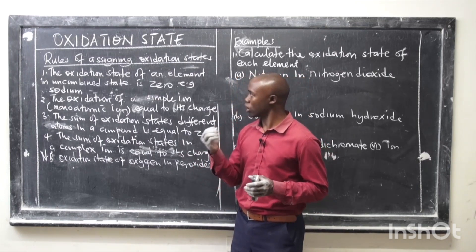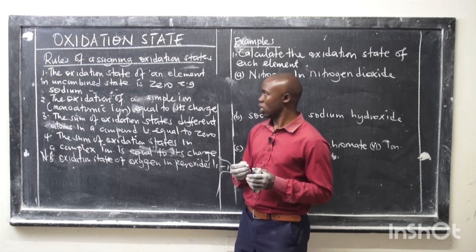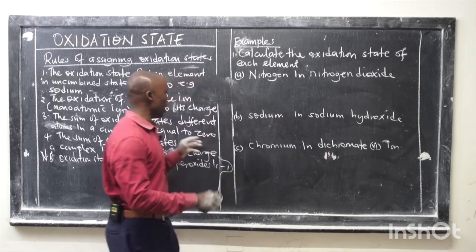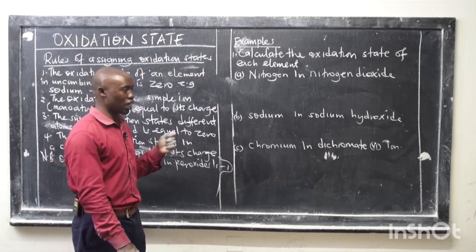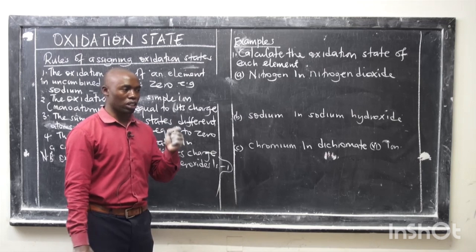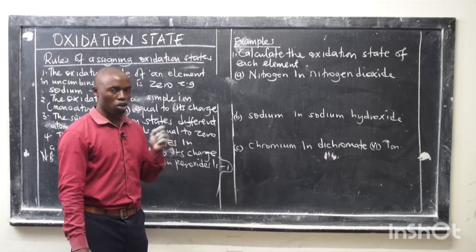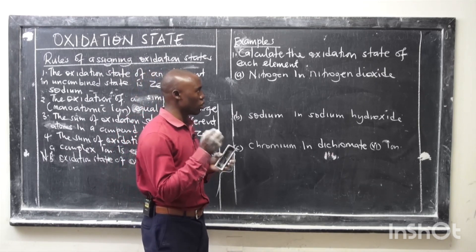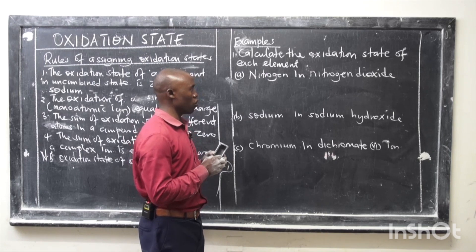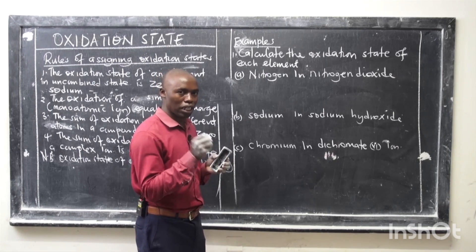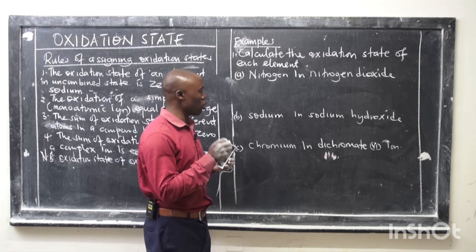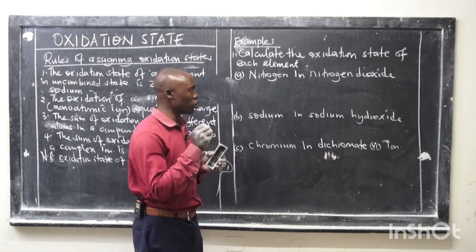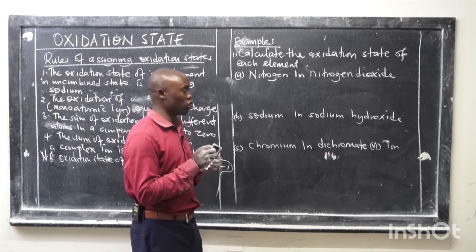Now let's dive into examples of how to calculate the oxidation state of an element. During calculation of oxidation states, we assign the atom whose oxidation state we want the variable X. Then we solve for X, and that will be the oxidation state.